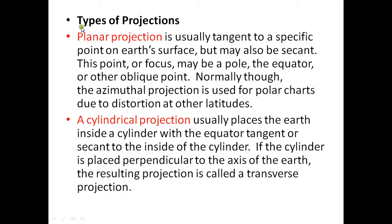The planar or azimuthal projection is usually tangent to a specific point on the Earth's surface, but may also be secant. The focus may be a pole or the equator. Normally, the azimuthal projection is used for polar charts due to distortion at other latitudes.